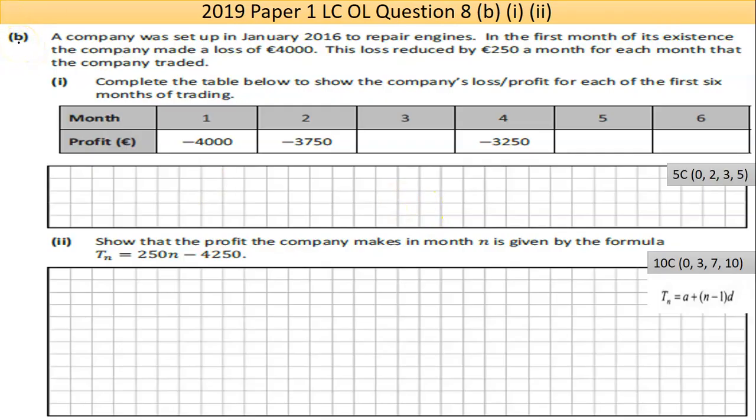Now part B here says, a company was set up in January 2016 to repair engines. In the first month of its existence, the company made a loss of €4,000. This loss reduced by €250 a month for each month that the company traded. So they're making less of a loss every month, so they're increasing their profit.